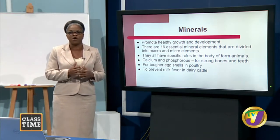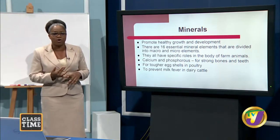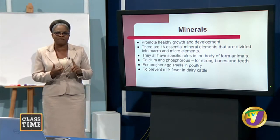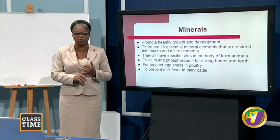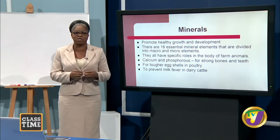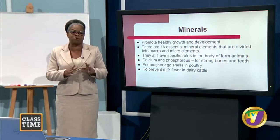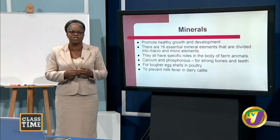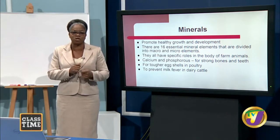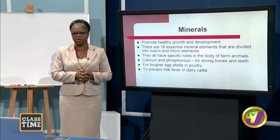So far we have looked at the six essential nutrients that farm animals need: water, carbohydrates, proteins, fats and oils, vitamins, and minerals. When these nutrients are lacking, animals will show signs of deficiency and will not be able to produce as well as they should. This affects profit, and once profit is affected, it impacts our ability to continue the practice of agriculture.